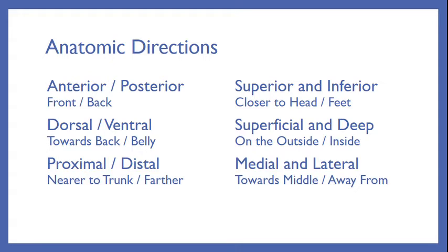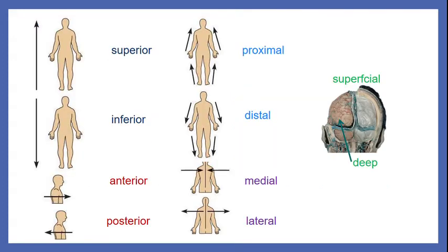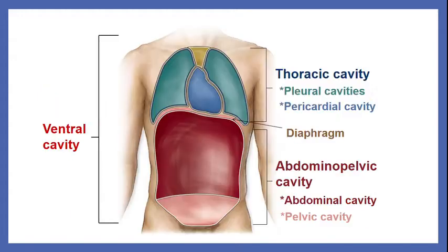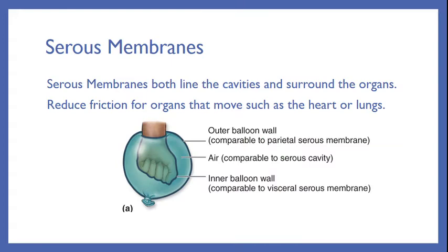These next couple of slides we won't go over in detail here, because we do talk about them a lot in lab. They include anatomic directions, such as superior towards the head or inferior towards the feet. You'll learn a lot more about them, and also body cavities — these include our thoracic cavity and our abdominal pelvic cavity.